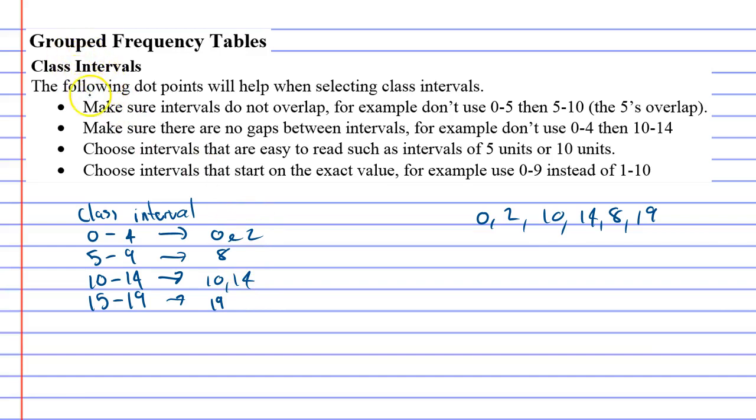When you're doing class intervals, there's some very important rules. First dot point says make sure the intervals do not overlap. For example, you can't go from 0 to 5 and then from 5 to 10, because if we have the number 5, which one would it go in? So no overlapping.